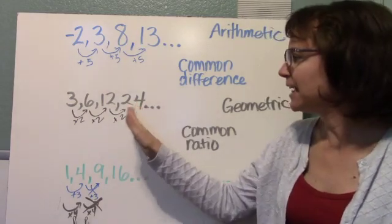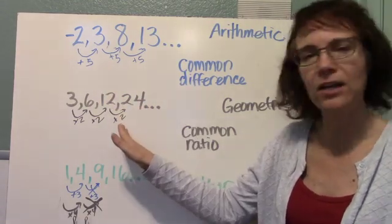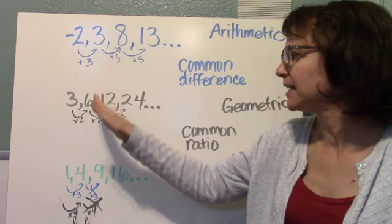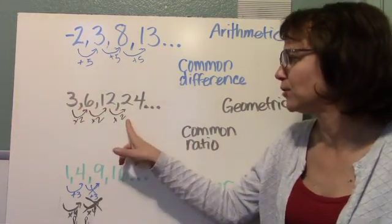That's because if I take the term after and divide by the term before, 24 over 12, I'll get 2. 12 over 6 is 2, 6 over 3 is 2. That's called the common ratio, this 2 right here.